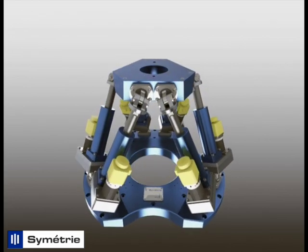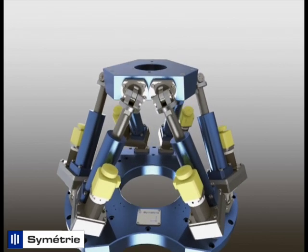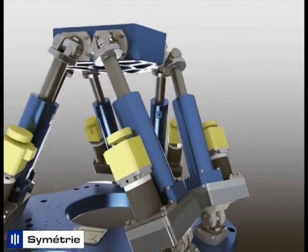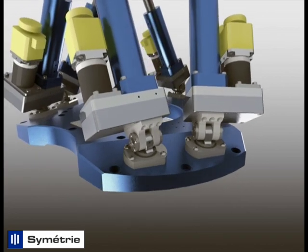The interface between the mobile platform and an actuator is done with a universal joint. The actuator is powered with an electrical motor. The interface between the base and an actuator is done with a ball joint.